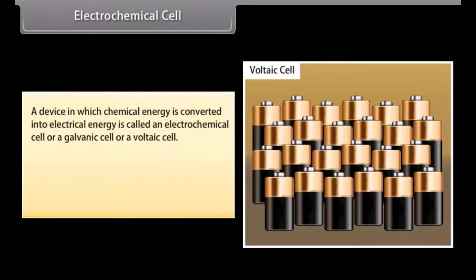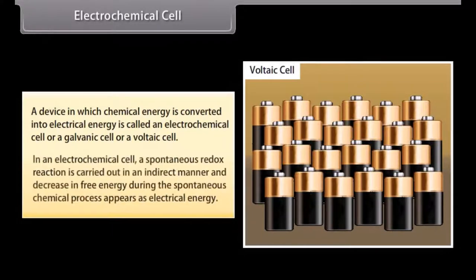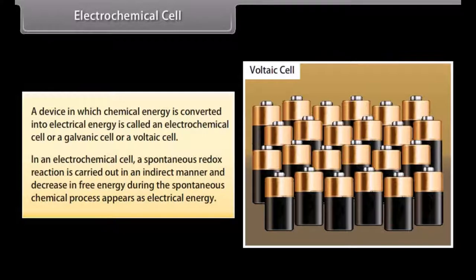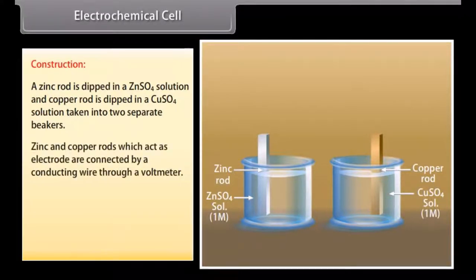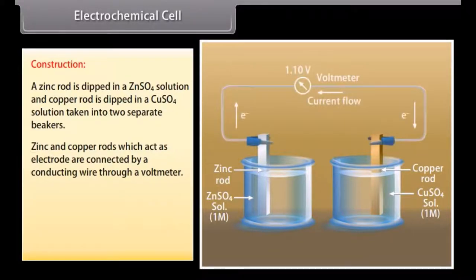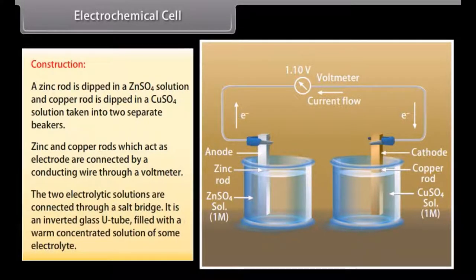Electrochemical Cell. A device in which chemical energy is converted into electrical energy is called an electrochemical cell, or a galvanic cell, or a voltaic cell. In an electrochemical cell, a spontaneous redox reaction is carried out in an indirect manner, and decrease in free energy during the spontaneous chemical process appears as electrical energy. Construction: a zinc rod is dipped in a ZnSO4 solution and a copper rod is dipped in a CuSO4 solution, taken into two separate beakers. Zinc and copper rods, which act as electrodes, are connected by a conducting wire through a voltmeter. The two electrolyte solutions are connected through a salt bridge — an inverted glass U-tube filled with a warm concentrated solution of some electrolyte.